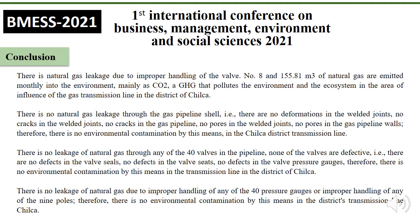Conclusion. There is natural gas leakage due to improper handling of the belt line. 8 units of natural gas are emitted monthly into the environment, mainly CO2 and CH4, which pollutes the environment and ecosystem in the area of influence of the gas transmission line in the district of Chilca. There is no natural gas leakage through the gas pipeline shield. There are no deformations in the weld joints, no cracks in the gas pipelines, no pores, and no pores in the gas pipeline walls; therefore there is no environmental contamination by this means in the Chilca 360 transmission line.